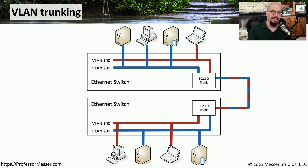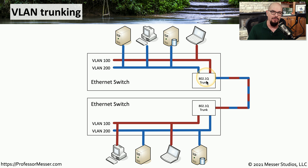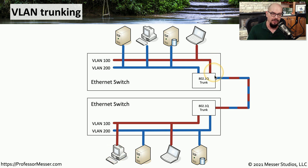Instead of extending separate ethernet links for each individual VLAN, we can extend a single connection and communicate all VLANs across that single connection. We refer to this as VLAN trunking. You may also see this referred to as the IEEE 802.1Q standard for ethernet trunking, or .1Q. With a .1Q trunk, we can send multiple VLANs across that trunk and break them out into the appropriate VLAN on the other side, while still logically segmenting the VLANs over that single link.